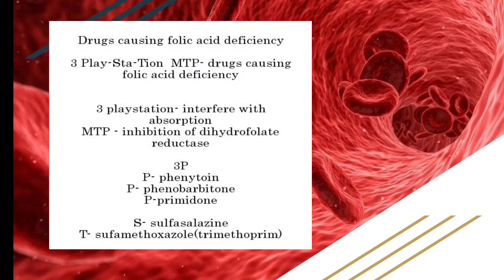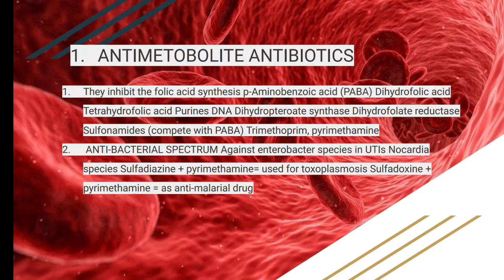These are tip points. You should memorize the folic acid deficiency-causing drugs using the mnemonic '3 PlayStation MTP.' The '3 PlayStation' drugs interfere with absorption and include phenytoin, phenobarbitone, and primidone. They inhibit dihydrofolate reductase, i.e., sulfasalazine and sulfamethoxazole. Anti-metabolite antibiotics inhibit folic acid synthesis through the pathway: para-aminobenzoic acid → dihydrofolic acid → tetrahydrofolic acid → purines/DNA, via dihydropteroate synthase and dihydrofolate reductase.